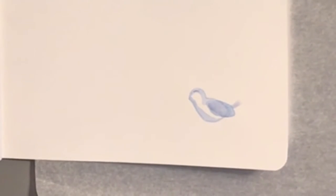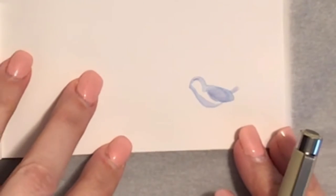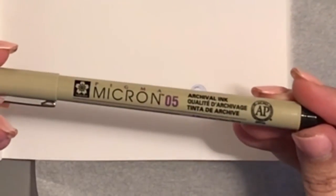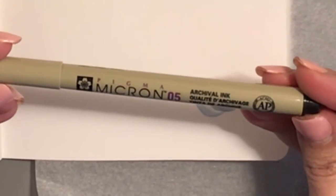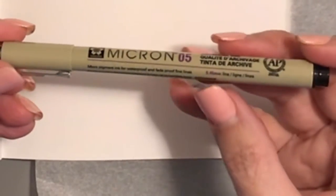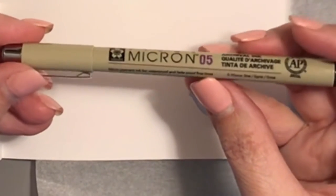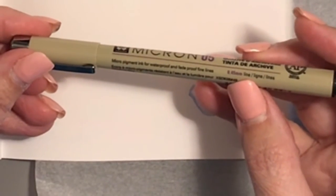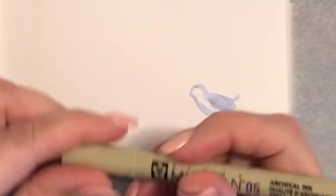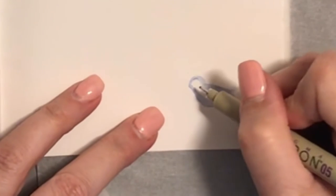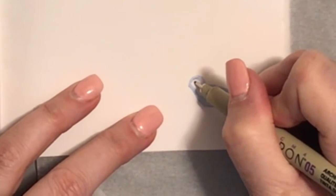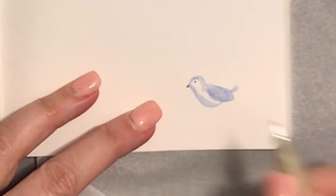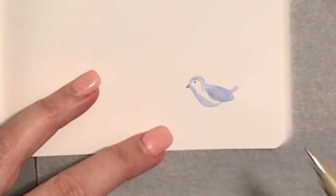Okay, now that it's dry, and I have to be sure it's completely dry because this will leak. This is a Micron 05 pen. The 05 is misleading because it actually says 0.45mm line. So anyway, that's what I'm going to use, black.